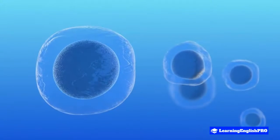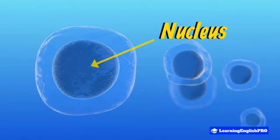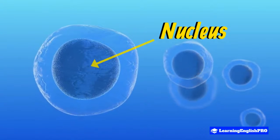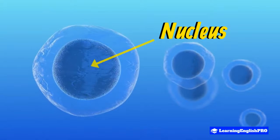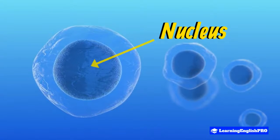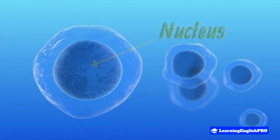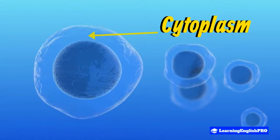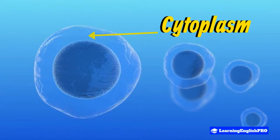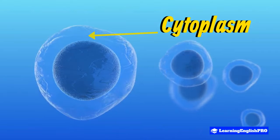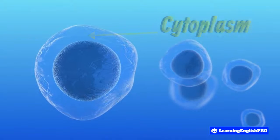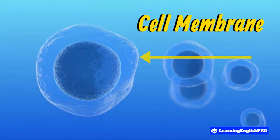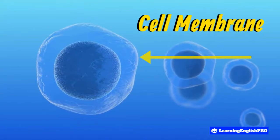Let's take a closer look at a cell. This is the nucleus at the center of the cell. The inside of a cell is filled with a liquid called cytoplasm, and the walls of the cell are called the cell membrane.